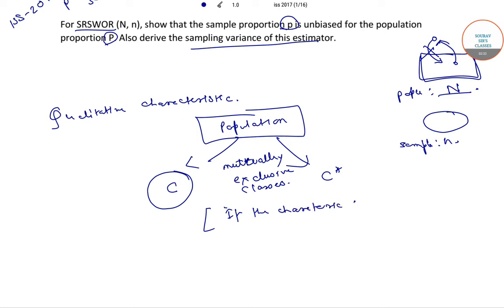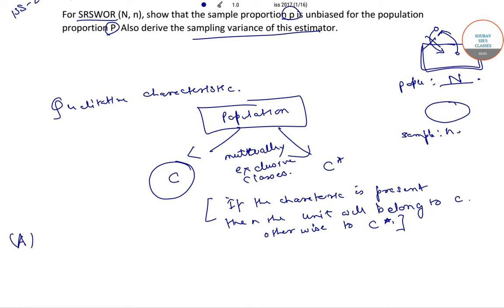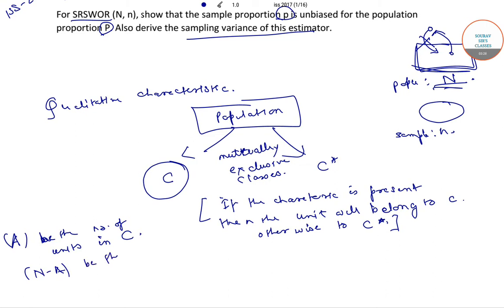If the characteristic is present, the unit will belong to C; otherwise to C star. Now suppose that a be the number of units in C. Since the total population size is capital N, therefore N minus a will be the number of units in C star.